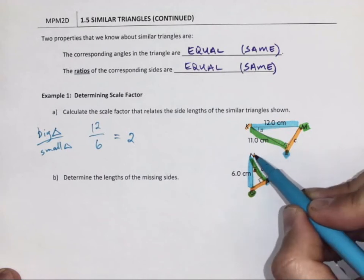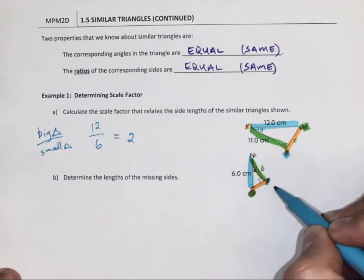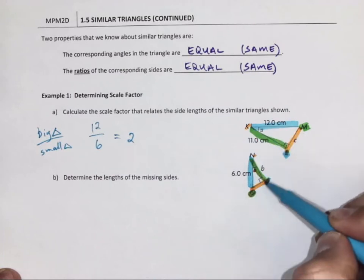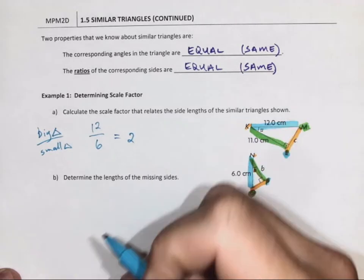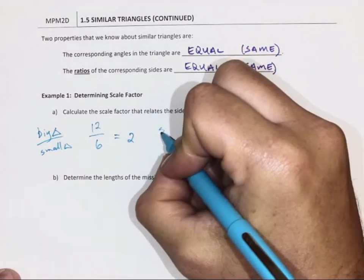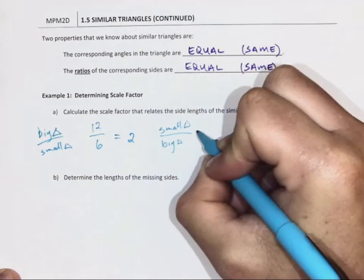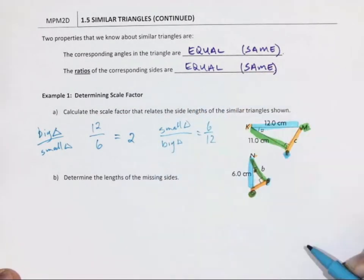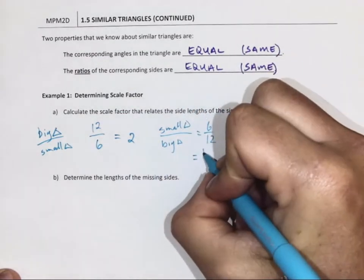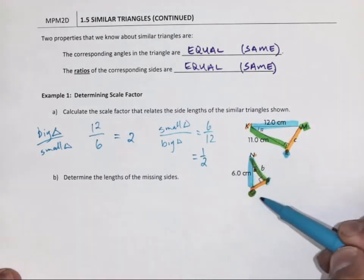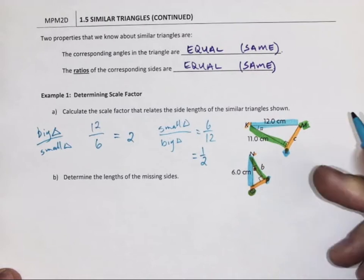So K, M, L which matches up with N, O, P - the scale factor is 2. So that means the big triangle is 2 times bigger than the small triangle. If I did it the opposite way and said the small triangle compared to the big triangle, I would get 6 over 12. And that ratio, that scale factor would be a half. So the small triangle is half as big as the big triangle.